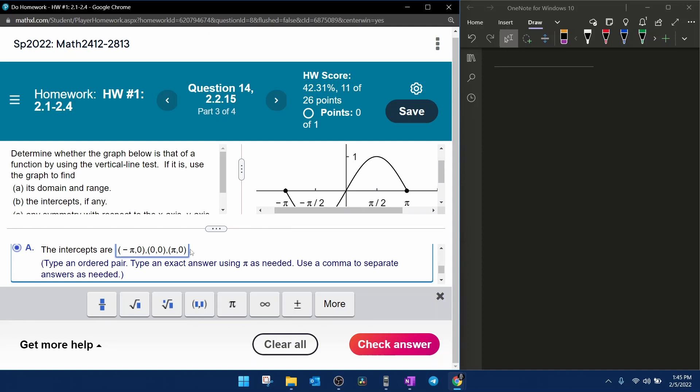And I would like to point out that zero comma zero, the origin, that is both an x-intercept and the y-intercept. So I should not need to repeat that. That should by itself count for both the x and the y-intercept.